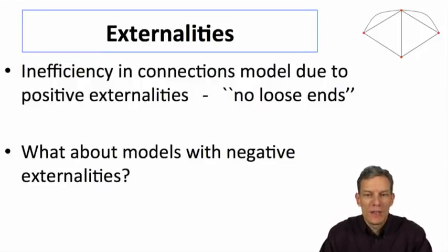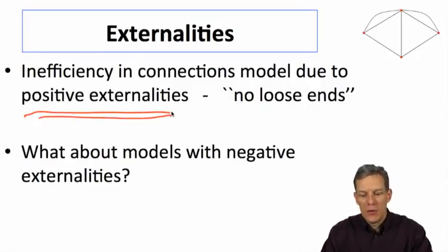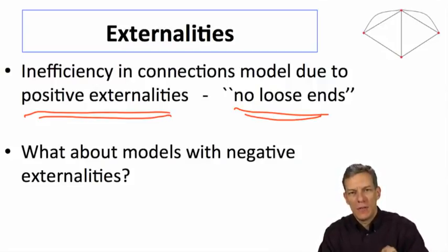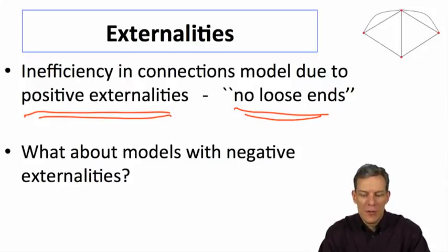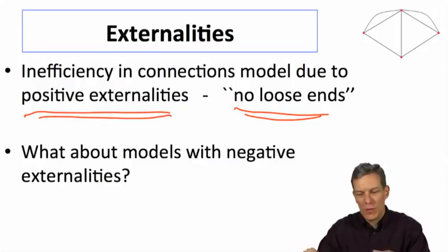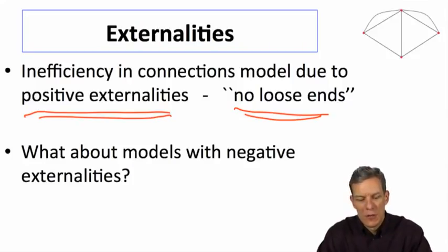Inefficiency in the connections model was due to the fact that there were positive externalities. The fact that the star wasn't willing to maintain external relationships came from the fact that those weren't giving the center of the star any value, and yet there were positive externalities to the other players that the center was not taking into account. This led to either complete failure where nothing formed, or overconnection in the sense that people had to have multiple indirect paths before they were willing to link with somebody.